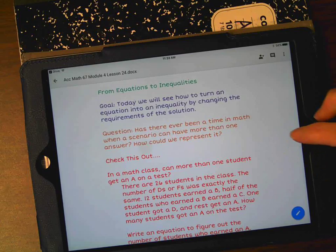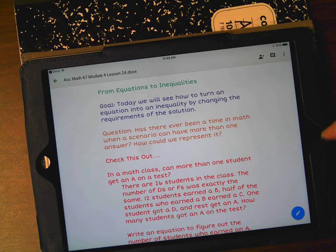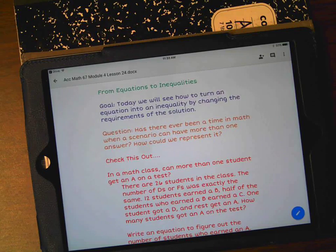The question I want you to think about is, has there ever been a time in math when a scenario could have more than one answer? For me, there's been that occasion a lot. The time that comes to mind is when you're talking about collecting test scores. Everyone in the class takes the same test, and we have to determine with our grading scale that if you get 90 or above, it's an A.